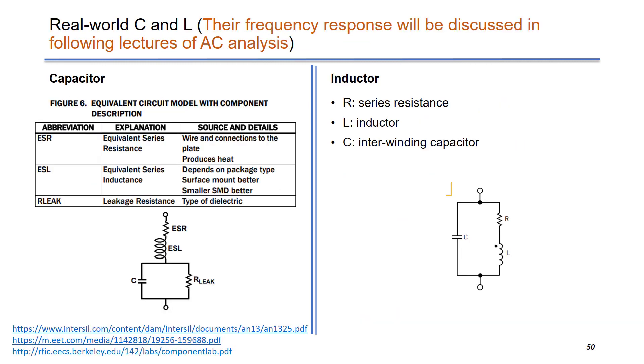However, in the real world, C and L have more complex models. On the left hand side, we have capacitor. We have ESR, equivalent series resistance, ESL, equivalent series inductance, and also the leakage resistance. Inductor also has a more complex model. This is an old-fashioned model, but it works as long as the frequency of interest is well below the self-resonant frequency of your inductor. You have a series resistance R, and also the interwinding capacitor as a parallel capacitor.